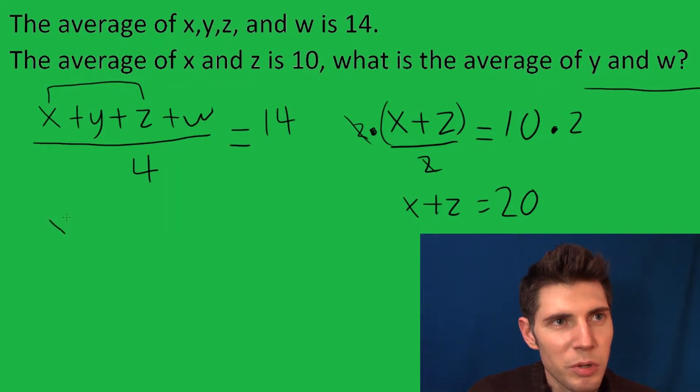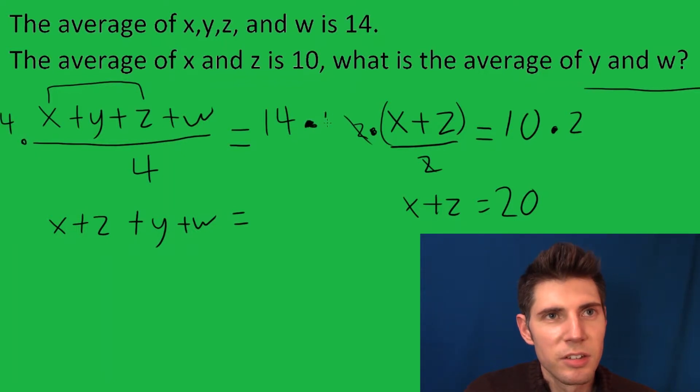So to show you the work, I'll rewrite them in different order. It doesn't matter what order we write these in, so we can say x plus z plus y plus w. And I'm also going to, while I'm at it, multiply these fours to both sides so I can get rid of the four underneath. So I rewrote this x plus y plus z plus w as x plus z plus y plus w, and then 14 times 4 is 56.